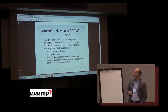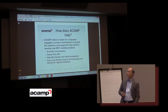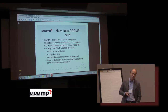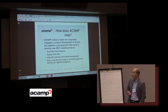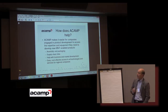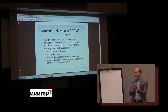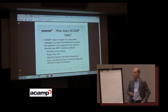ACAMP tries to help with all of those problems in one way, shape or form. We're trying to make it easy for companies to engage in the product development process, to access the expertise and equipment they need to develop new M&T-enabled products. We actually have in-house a full assembly and packaging capability, which lets you take your nano idea or your micro idea and turn it into a product.